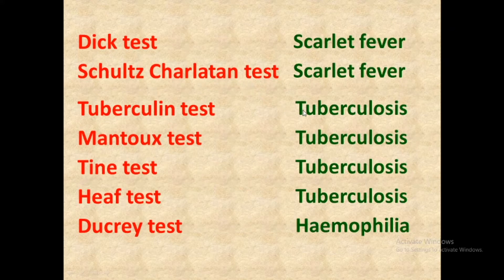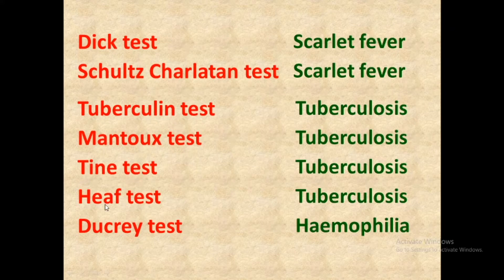Four different tests are used for the diagnosis of tuberculosis. First is the Tuberculin test, second is the Mantoux test, third is the Tine test, and fourth is the Heaf test. You can remember these using the mnemonic T-M-T-H: T indicates Tuberculin test, M indicates Mantoux test, T indicates Tine test, and H indicates Heaf test. So T-M-T-H equals tuberculosis.